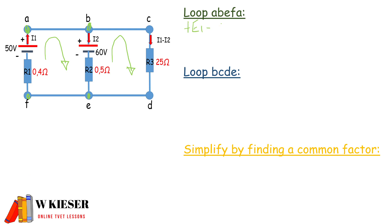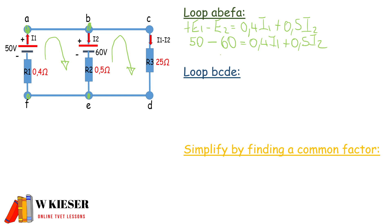Simplifying that equation: plus E1 minus E2 gives us 50 minus 60 volts, and 0.4 times I1 plus 0.5 times I2. Therefore, equation one is: minus 10 equals 0.4·I1 plus 0.5·I2.